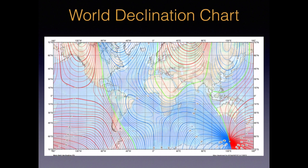Just as declination changes within the U.S., it also varies greatly around the world. You can see the lines follow some pretty crazy patterns, especially when you get close to the south magnetic pole. This is one of the extra challenges of polar exploration — your compass basically doesn't work. Notice the green line winding through the middle, showing a line of zero declination. If you were on this line, your compass needle would point to both true north and magnetic north.